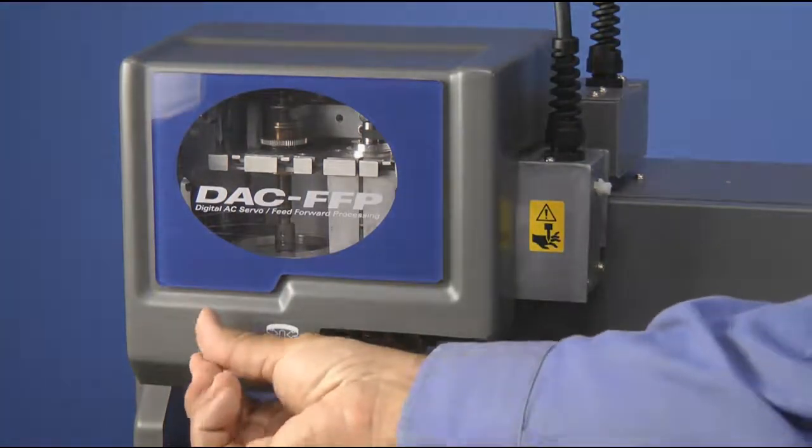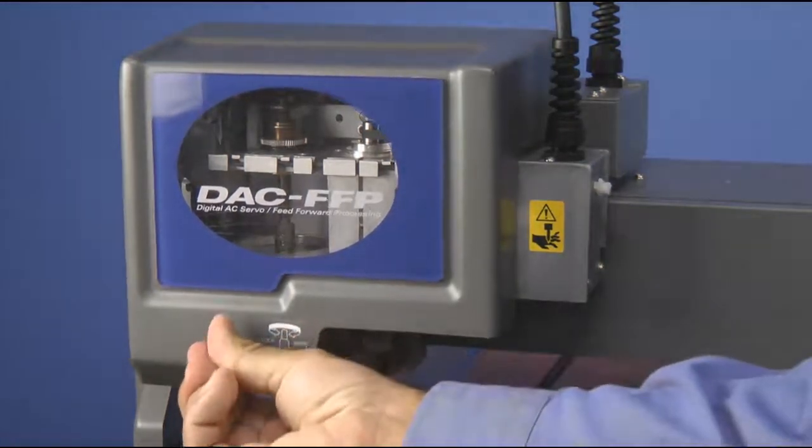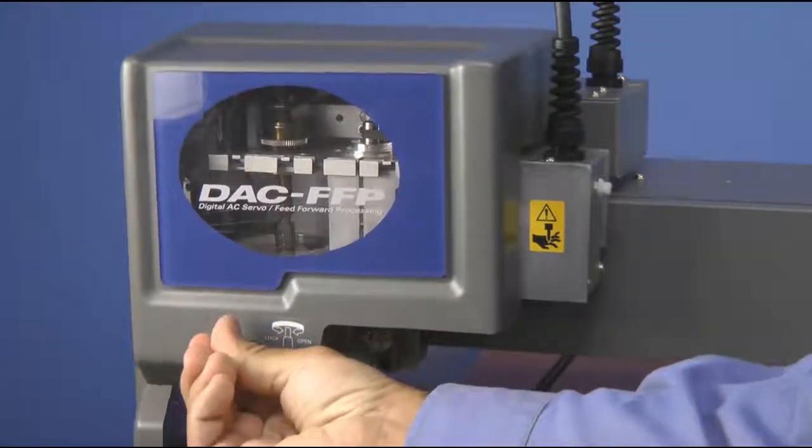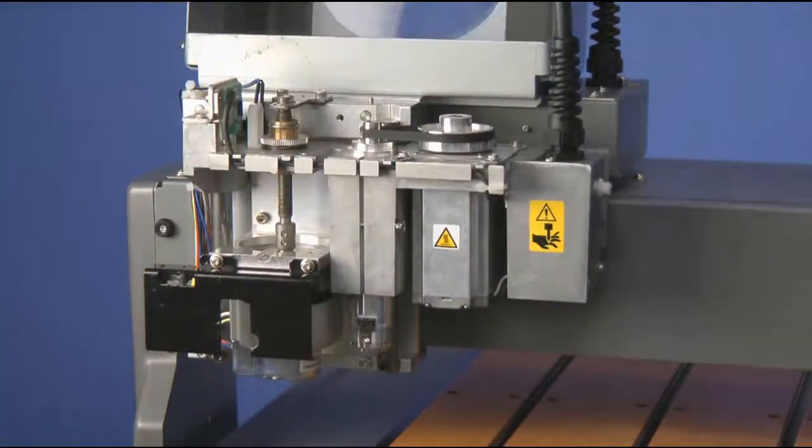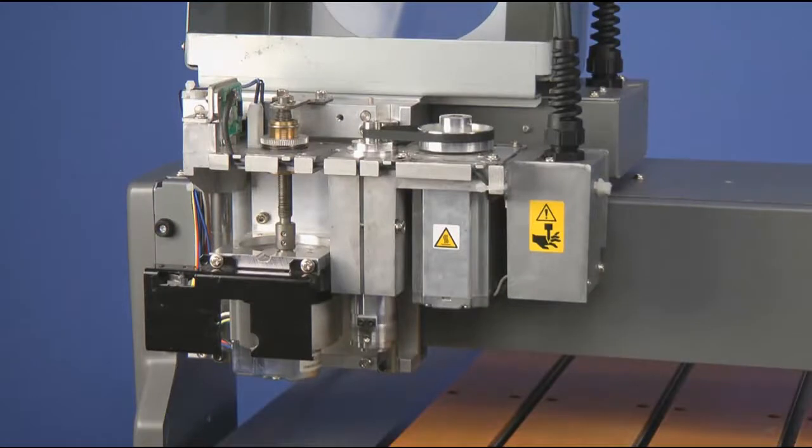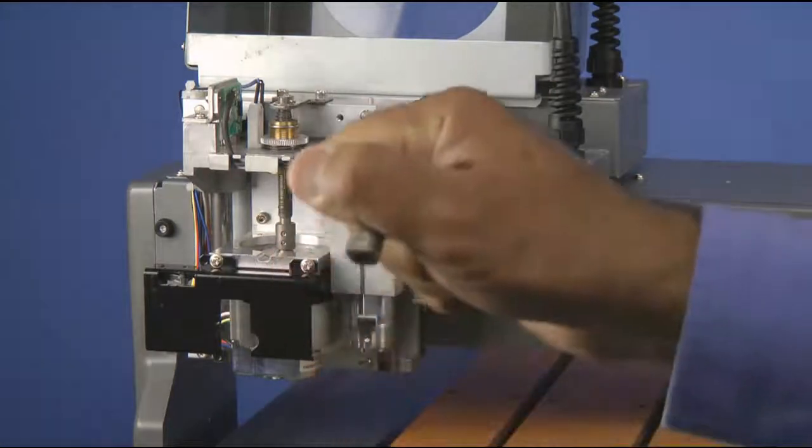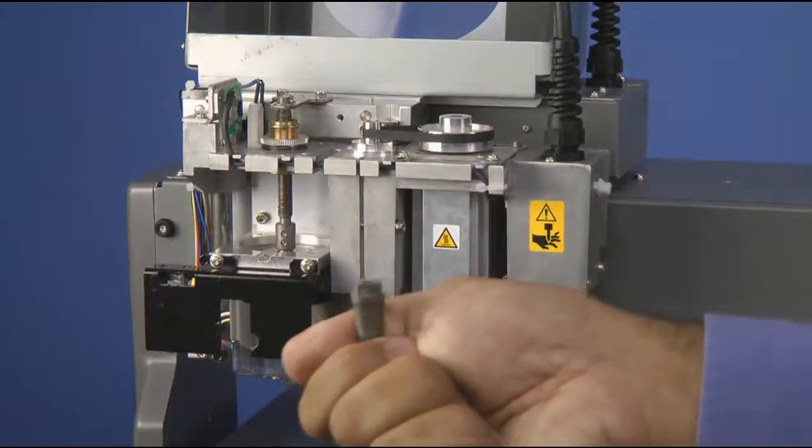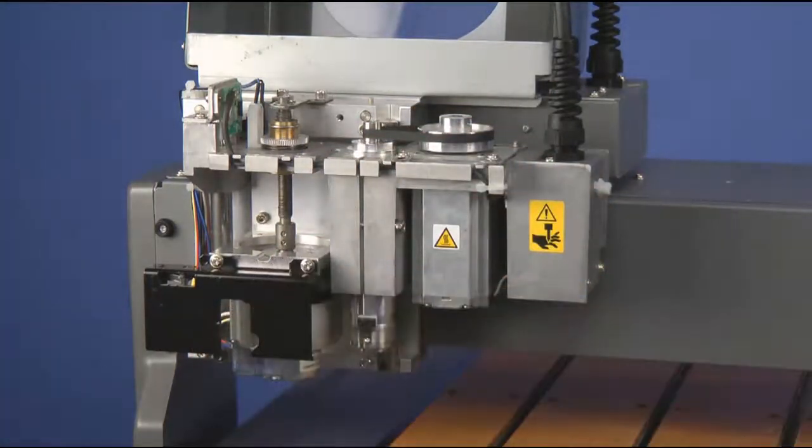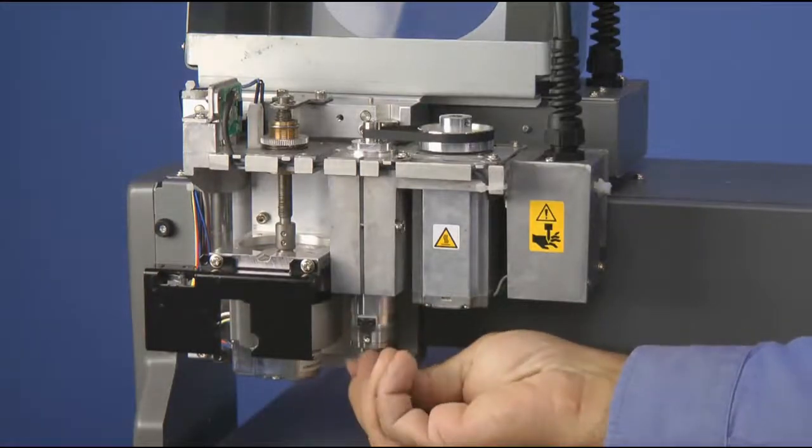Next, we will open up the Spindle Cover. And we will take our 1/64th solid collet and we will install the collet to the bottom of the spindle assembly.